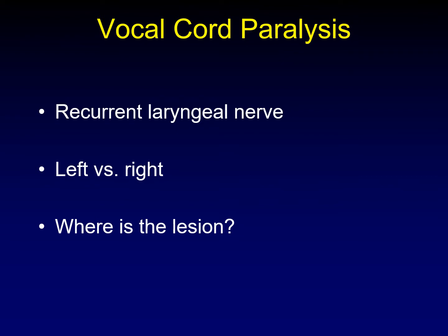Vocal cord paralysis is one of the most important entities when discussing the vagus nerve. The recurrent laryngeal nerve is a branch of the vagus nerve, and its anatomy depends on which side. On the left, the vagus extends into the chest, gives off the recurrent laryngeal nerve, which loops through the aortopulmonary window and rises back up in the tracheoesophageal groove. On the right, the vagus comes down to the thoracic inlet, gives off the recurrent laryngeal nerve, which loops underneath the subclavian artery and back up in the tracheoesophageal groove.